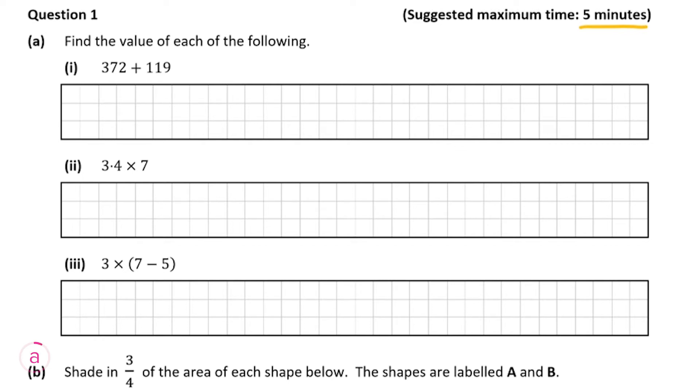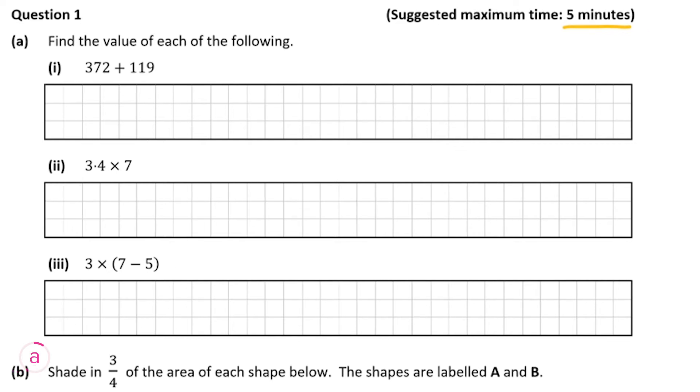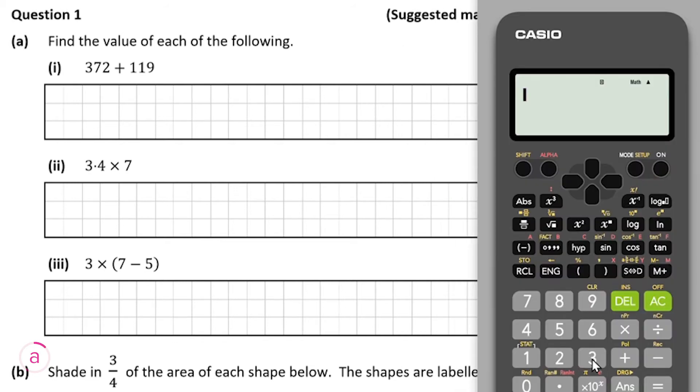So getting up our calculator here, all we have to do to solve this question is first we put in 372 like that, and then we're going to be plusing 119 and then pressing equals. We'll get our final answer of 491.